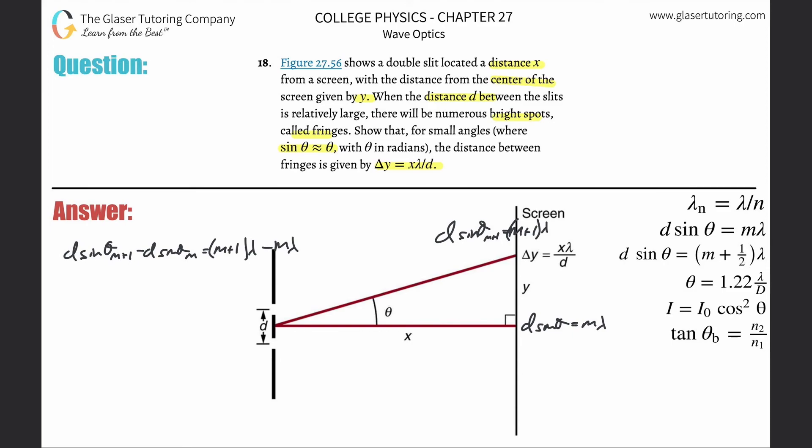Essentially now what happens is we can do this in a couple of ways. We can take out the d here, we can then write sin(θ_m+1) minus sin(θ_m) will then be equal to, we can factor out the λ, so this would just be m+1 and then minus m. Notice then the m's would cancel.